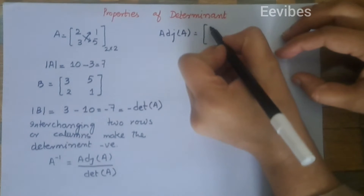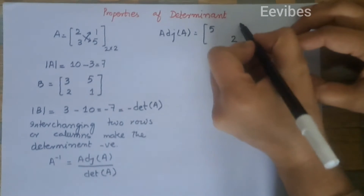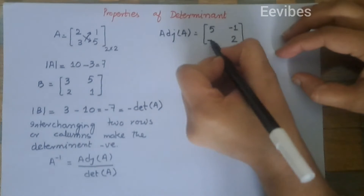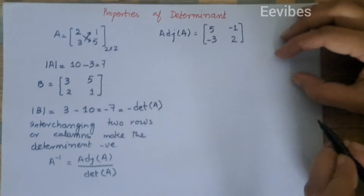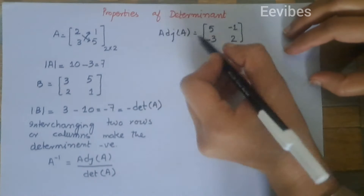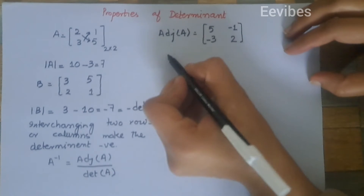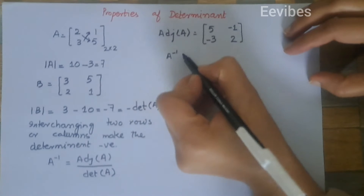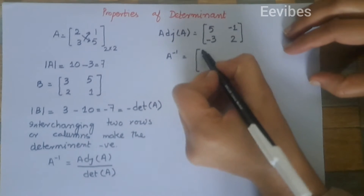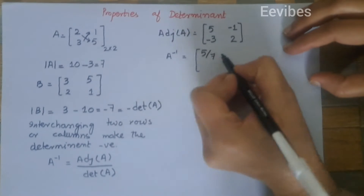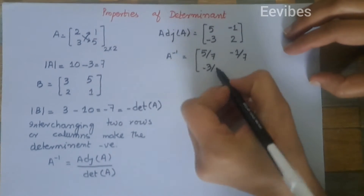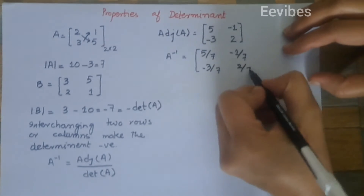So five will be switched to the position of two, and two will come to the position of five, while the rest of the entries will switch their signs. This gives us the adjoint of A. Therefore A inverse equals [[5/7, -1/7], [-3/7, 2/7]].